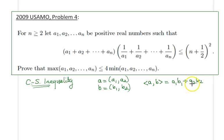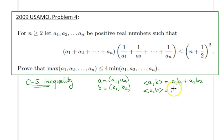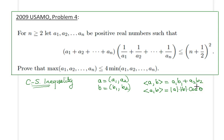We define the inner product as a1*b1 + a2*b2, basically multiplying them component-wise and then adding the result. Alternatively, if we know the length of these two vectors, we can multiply those lengths and then multiply by the cosine of the angle between them. To establish the Cauchy-Schwarz inequality, all you need to do is set these two right-hand sides equal to each other and square both sides.